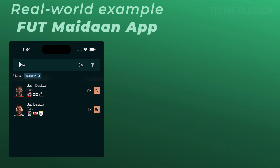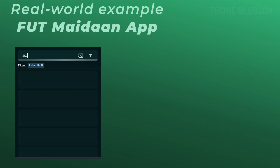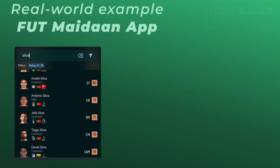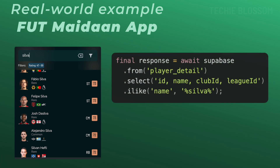That's where ilike comes in. In Foot Maidan, we want the player search to be user-friendly, so we use the ilike filter instead of like for case-insensitive searches. This means that if a user types silva in lowercase, they will still see results for Bernardo Silva or any other Silva, whether in lowercase or uppercase. Here's how you would write the query: so instead of like, I would use ilike here. The response remains the same. Using ilike ensures that users don't have to worry about capitalization when searching.